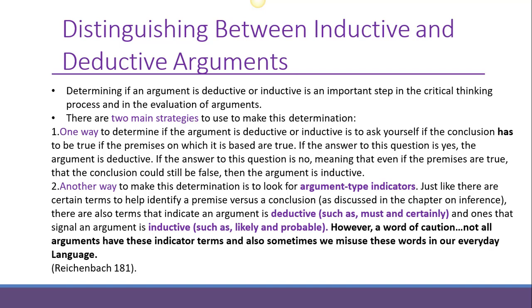Another way to determine whether it's inductive or deductive is to look for indicator words. Common indicators of a deductive argument include words like 'must' and 'certainly,' while inductive reasoning is signaled by words like 'likely' or 'probable.' However, authors don't have to use these indicator terms, and sometimes — especially in less formal communication — these phrases can even be misused. So it's not a foolproof method, but it's one way to help figure it out.